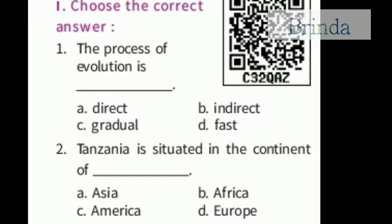Moving on to the exercise. Choose the correct answer. First question: the process of evolution is — direct, indirect, gradual, or fast? The answer is gradual — evolution is a gradual process. Second question: Tanzania is situated in the continent of — Asia, Africa, America, or Europe? Tanzania is a country in Africa.